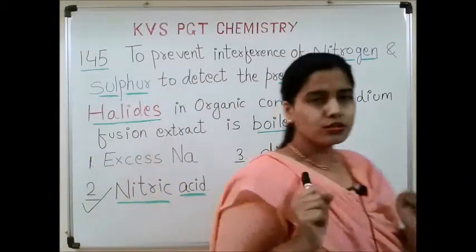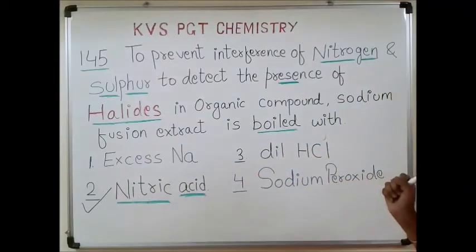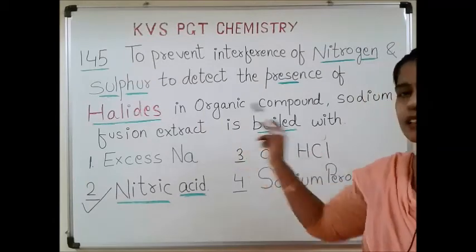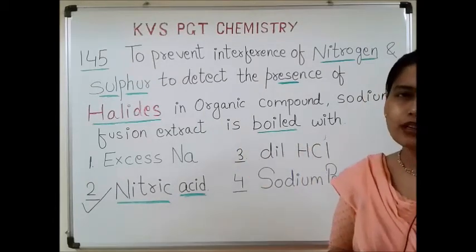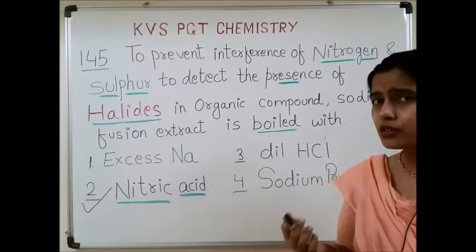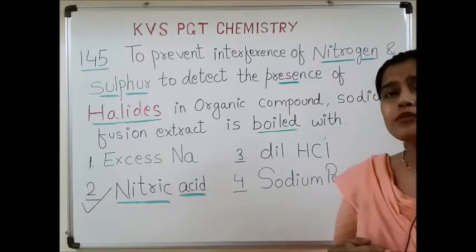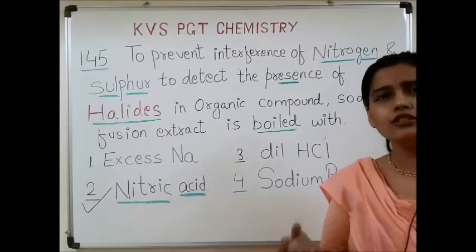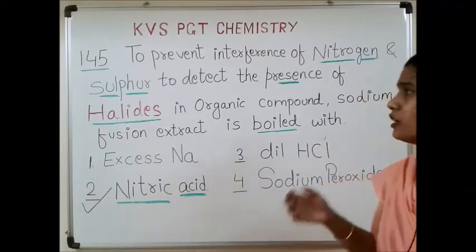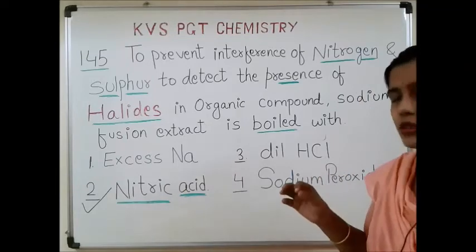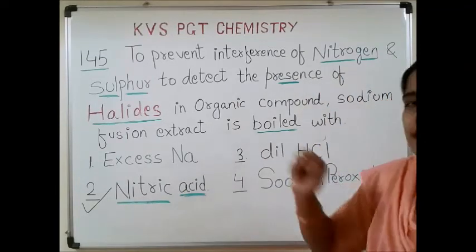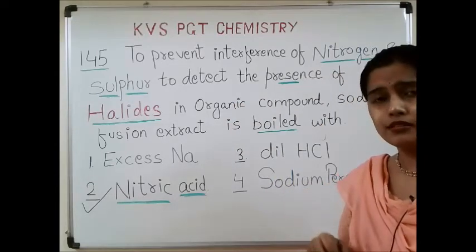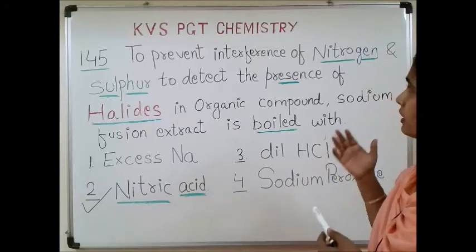Let us understand what this question is about. While you detect the presence of halide in any organic sample, which test do you perform, which reagent do you use? We are using the silver nitrate test to detect the presence of halide. Halide means any halogen: fluorine, chlorine, bromine, iodine. Now the problem is that nitrogen and sulfur usually interfere.